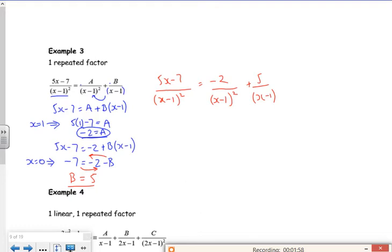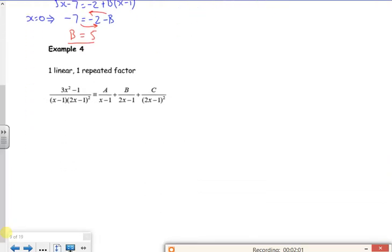So example 4. So example 4 has got one linear and one repeated. So same idea, multiply through by the bottom line by this. So 3x squared minus 1. The A's only got that part, so it's missing 2x minus 1 squared. The B has only got that part, so it's missing x minus 1 times by 2x minus 1.